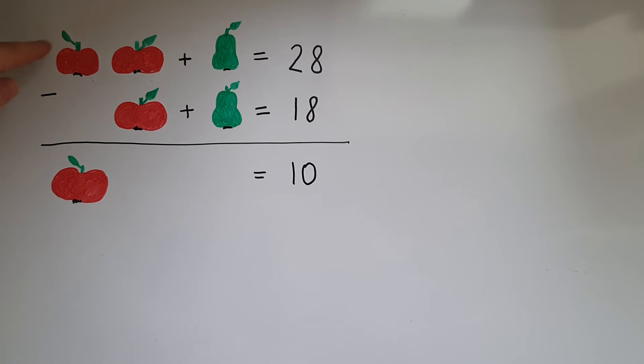So two apples take away one apple leaves me with one apple. A pear take away a pear is really no pears. So that means that the price of one apple is 10 pence.